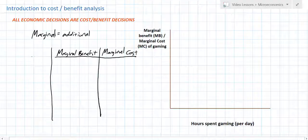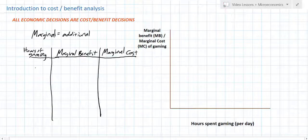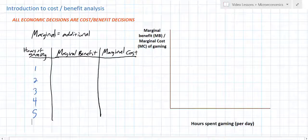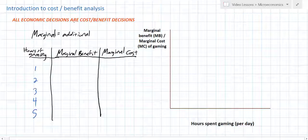So we need to add one more column to our table here. Let's look at hours of gaming — we can game for either one, two, three, four, or five hours. That's how much free time I'm assuming that you have. Ultimately, we're going to graph the marginal benefit and the marginal cost of gaming. But first, we need to think about and brainstorm some possible values to put in these two fields: marginal benefit and marginal cost.